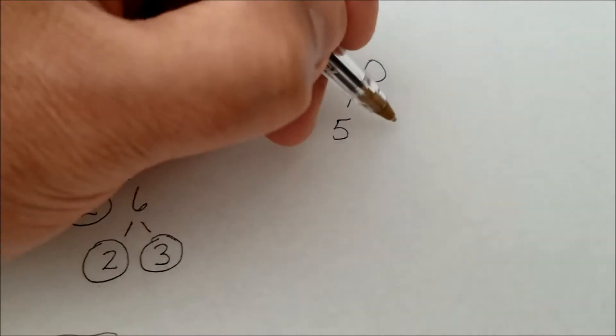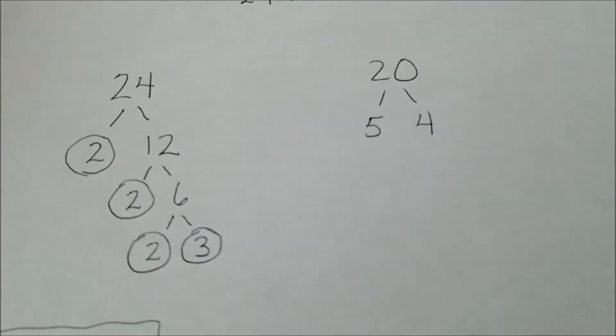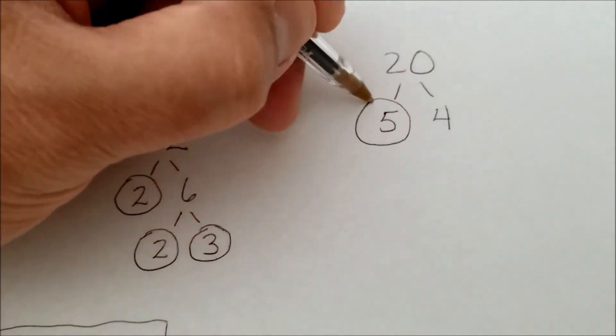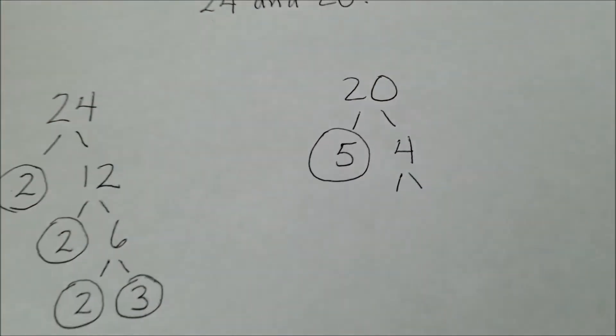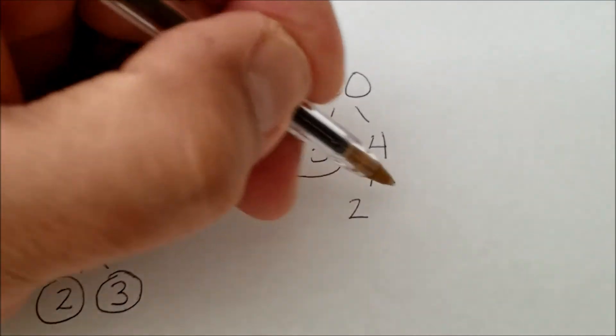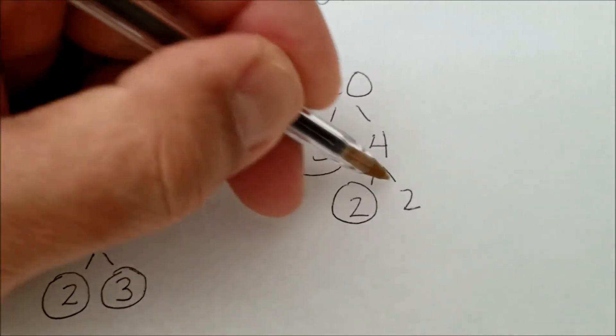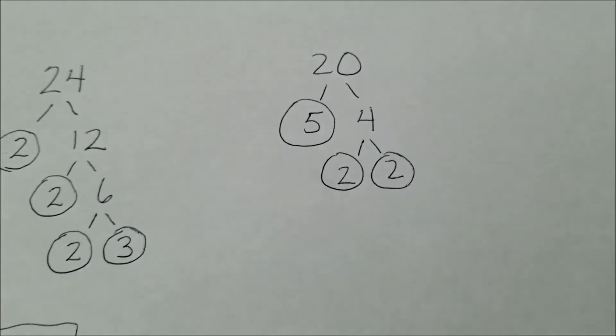What two factors multiplied give me 20? I can do 5 times 4. I'm going to circle the 5 because 5 is prime. And then factoring out the 4, I get 2 times 2 is 4. Like that.